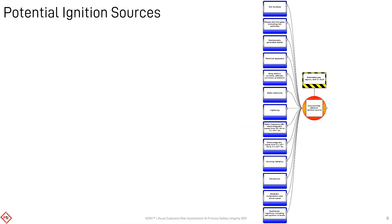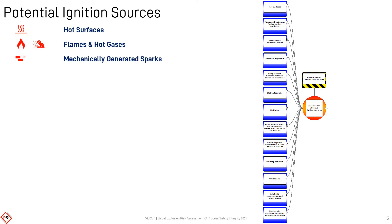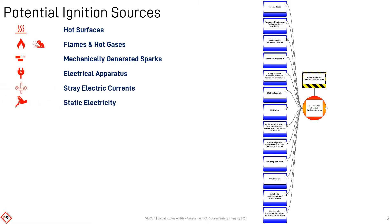A list of potential ignition sources has been developed from EN 1127 Part 1. These threats are: hot surfaces; naked flames or hot gases, for example from welding; mechanically generated sparks, typically friction; electrical apparatus, which may create sparks; stray electric currents; and static discharges.